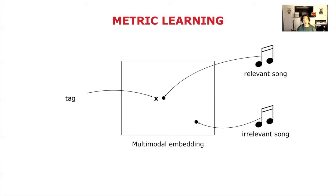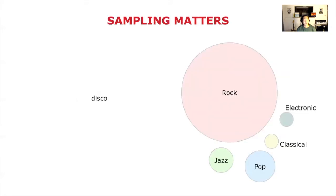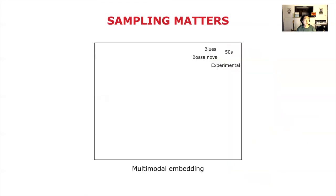In our paper, we investigate three ideas to successfully introduce multimodal metric learning for music retrieval. The first topic is sampling strategy. Sampling matters a lot in metric learning. As you can see from this example, real-world datasets are imbalanced. From a given anchor tag 'disco,' if you randomly sample a negative example, a more frequent tag like 'rock' is more likely to be sampled. Less represented tags will have less opportunity to be sampled as negative examples, so in the embedding space, less represented tags will be mixed together. Also, more frequent tags will be less informative because they have been seen enough during training, making training less efficient.